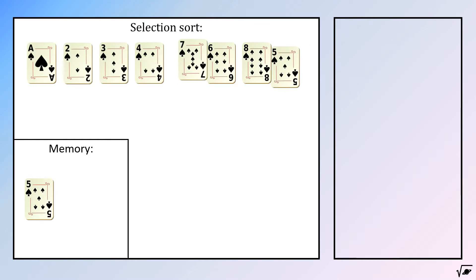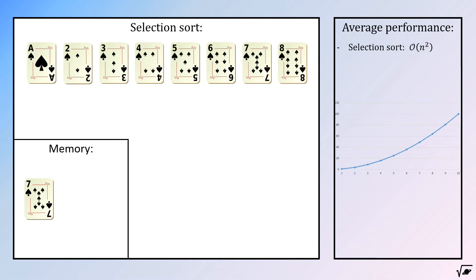But how efficient is this algorithm? Well, the average performance of this sorting algorithm is in the order of n squared. Meaning that doubling the amount of cards to order will result in a quadruple amount of work.